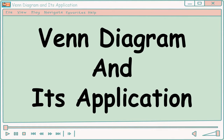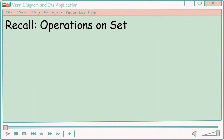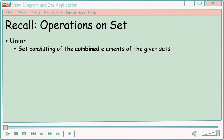Hi, students! Welcome again to another video lesson. Today, we're going to discuss Venn Diagram and its application. So, let's recall first operations on set. First, we have the union — the set consisting of combined elements of the given sets. So, pag sinabi nating combined, pagsasamahin natin yung elements ng given sets.